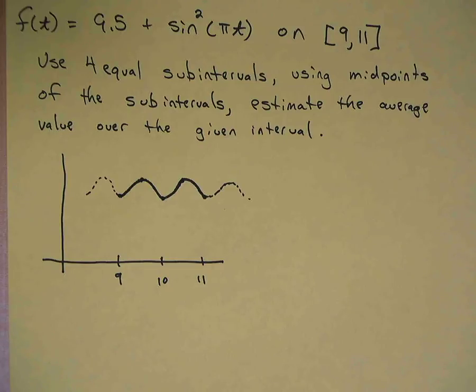Okay, so we've got the function f of t is equal to 9.5 plus sine squared pi t on the interval 9 to 11. We're asked to use four equal subintervals using midpoints of the subintervals to estimate the average value over the given interval.